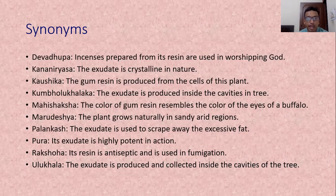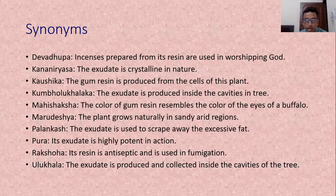Kumbha Ulukhala — the exudate is produced inside the cavity of the plant, so it is known as Kumbha Ulukhala. Mahisaksha — Mahisha means buffalo, Aksha means eye; the color of the gum resin is similar to the eye of a buffalo, so it is known as Mahisaksha. Maru Desha — Maru means desert place, Desha means area; this plant naturally grows in sandy, arid regions. Palankasha — Palan means fat, Kasha means reducing; this exudate is used to reduce excessive fat from the body, so it is known as Palankasha.